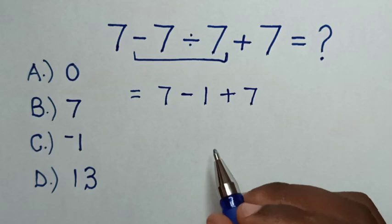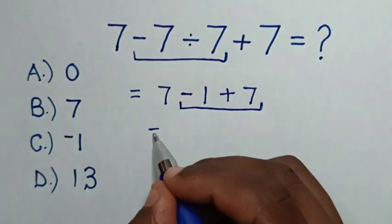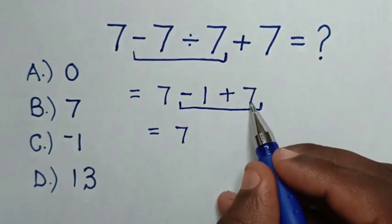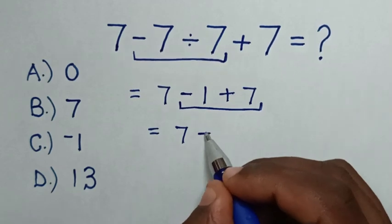Then we deal with this addition. Then it will be equal to 7. Negative 1 plus 7 is the same as 7 minus 1, which is positive 6.